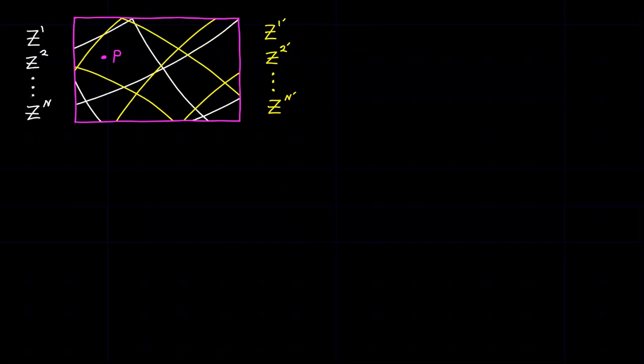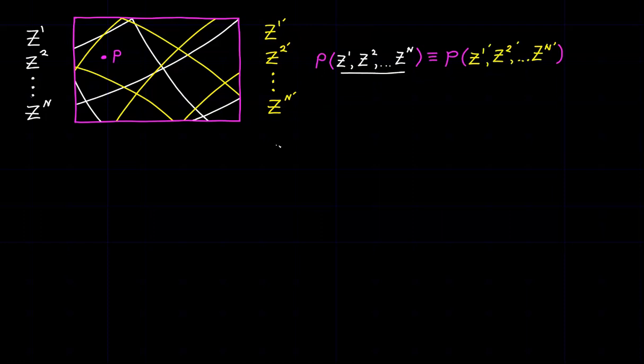I'll put them both up here so you can see that they are quite different. A point like point P can now be identified or represented in either coordinate system — it can be a function either of our unprimed coordinates or of the primed coordinates. In many applications it's quite useful and sometimes essential that we be able to transform back and forth between these two coordinate systems, so what we need is a set of functions to perform what we call a coordinate transformation.